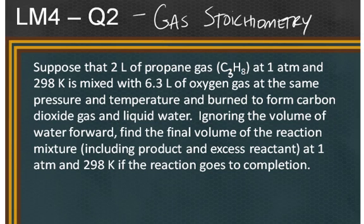This is a gas stoichiometry problem. Suppose that 2 liters of propane gas, C3H8, at 1 atmosphere and 298 Kelvin is mixed with 6.3 liters of oxygen gas at the same pressure and temperature and burned to form carbon dioxide and liquid water. Ignoring the volume of water, find the volume of the reaction mixture including product and excess reactant at 1 atmosphere and 298 Kelvin if the reaction goes to completion.